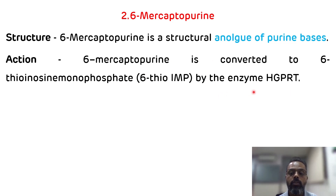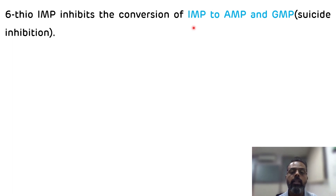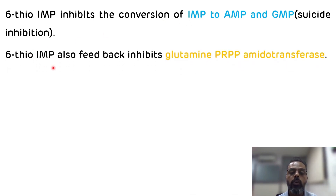This reaction is very lethal. The 6-thioinosine monophosphate synthesized in this reaction will inhibit the conversion of IMP (inosine monophosphate) to adenosine monophosphate and guanosine monophosphate by suicidal inhibition. Remember, IMP is the first purine nucleotide synthesized in the de novo synthesis pathway. In addition, 6-thioinosine monophosphate also feedbackly inhibits glutamine PRPP amidotransferase, which is the rate-limiting enzyme of de novo synthesis of purine nucleotides.